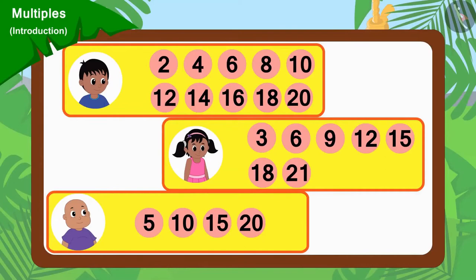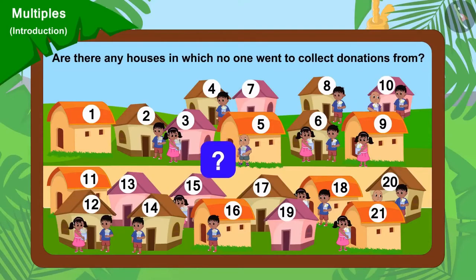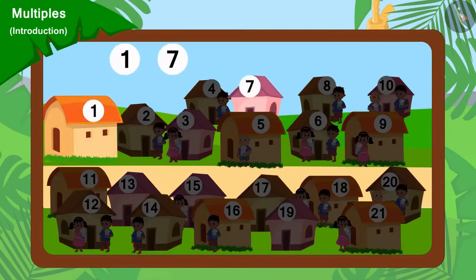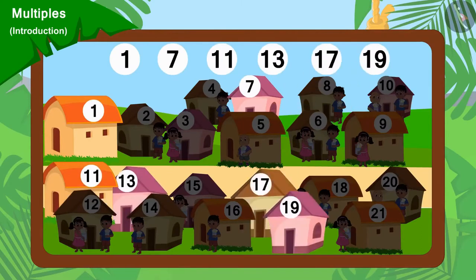Here, the numbers of the houses from where Raju, Pinky and Bablu went to collect donations are written. Are there any houses in which no one went to collect donations? You can stop the video and find the answer. Yes, house numbers 1, 7, 11, 13, 17 and 19 are the houses in which nobody went to collect donations.